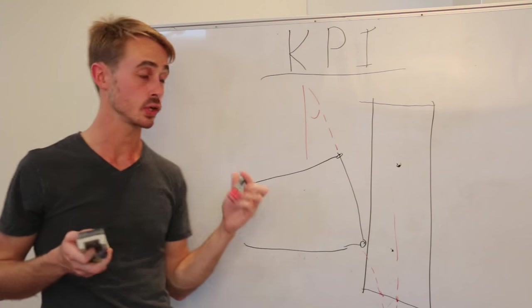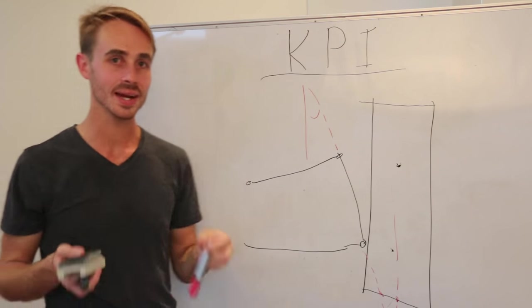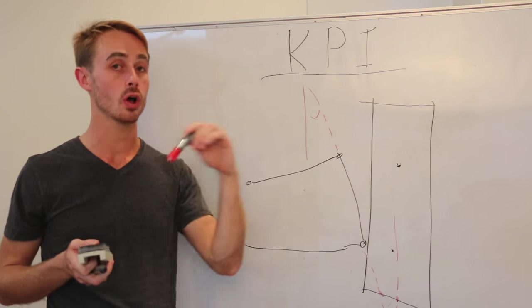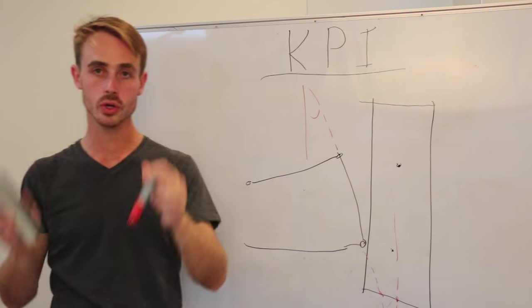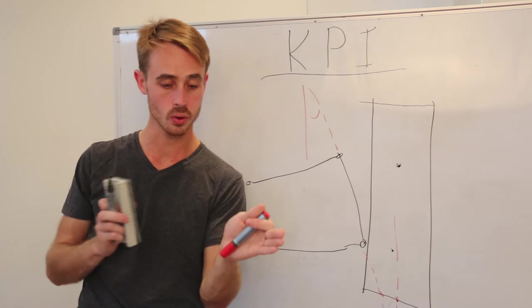So what effect does KPI have on your handling? Well it actually has a negative effect. It does the exact opposite of caster in terms of what camber it's producing. So as you turn your wheel, your wheel will turn into the corner.